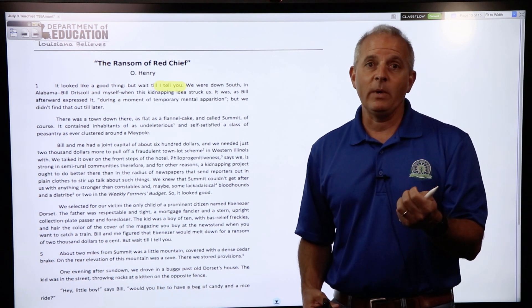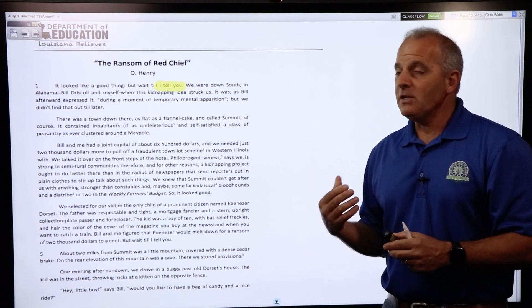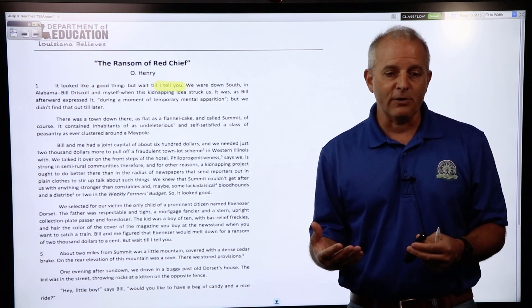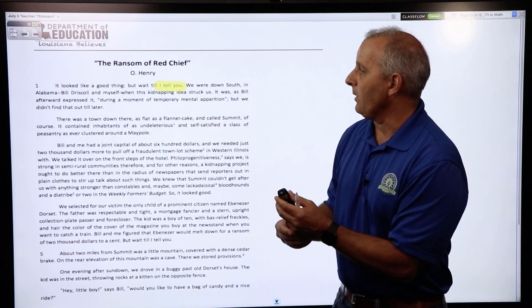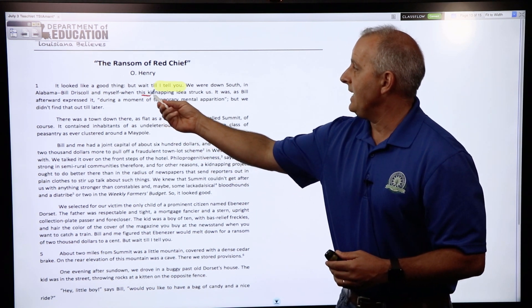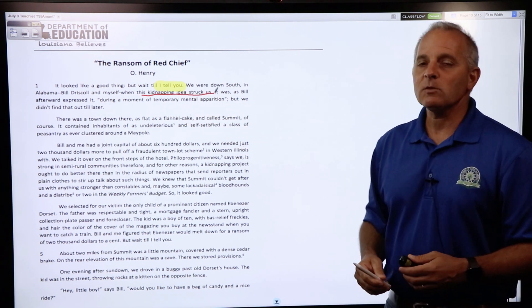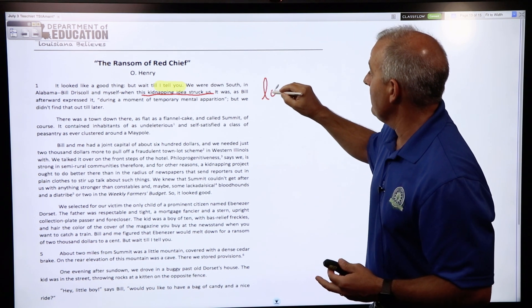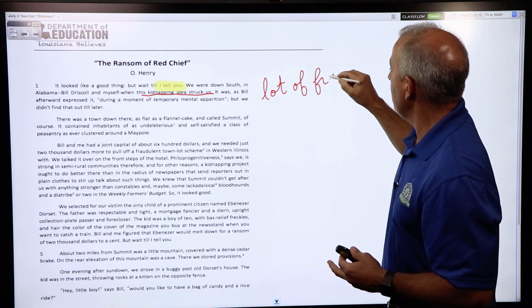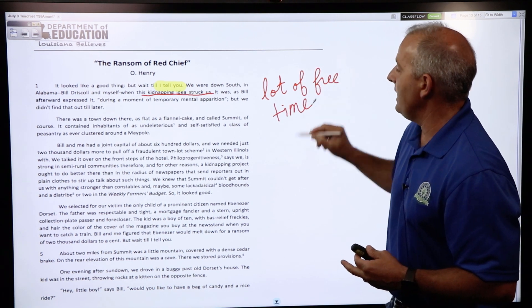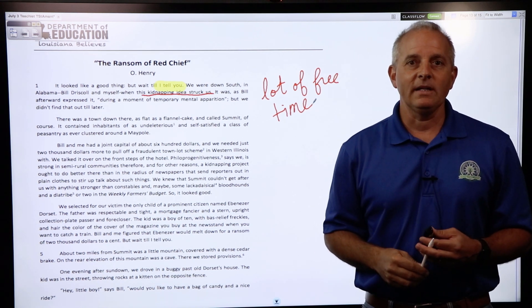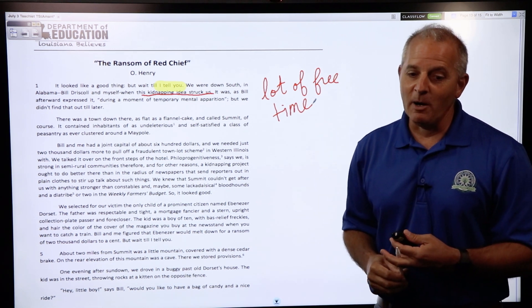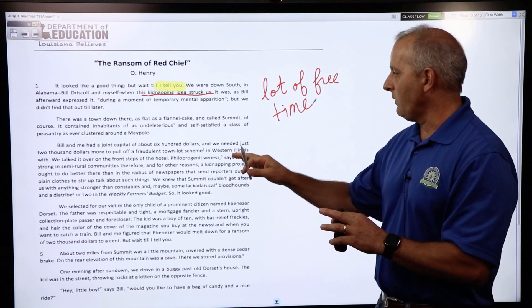Another section of the text that I think says a little bit about who the narrator is, what kind of person the narrator is, is this part right here: 'this kidnapping idea struck us.' That tells me that the narrator and his partner had a lot of free time. If you're going to sit there and consider how to kidnap someone, then you've got some time on your hands that you're going to be doing some things that are not quite on the up and up.